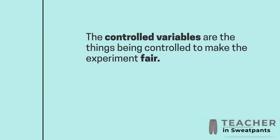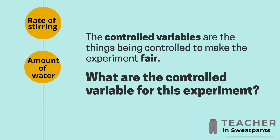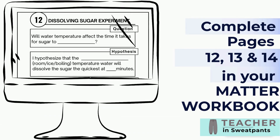The controlled variables are the things being controlled to make your experiment fair. What are the controlled variables for this experiment? Rate of stirring, amount of water, and type of sugar. Complete pages 12, 13, and 14 in your matter workbook.